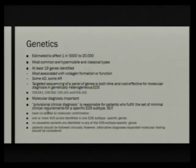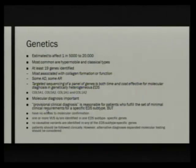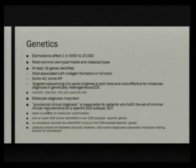A provisional clinical diagnosis is reasonable if you are unable to get molecular confirmation — whether it's unavailable, the patient doesn't have insurance, you're in a place that doesn't offer testing, or if you get variants of unknown significance, or no causative variants are identified but they still meet all clinical criteria. However, if that's the case, you should not focus in and say this is what they have without looking at other explanations for their pathology.